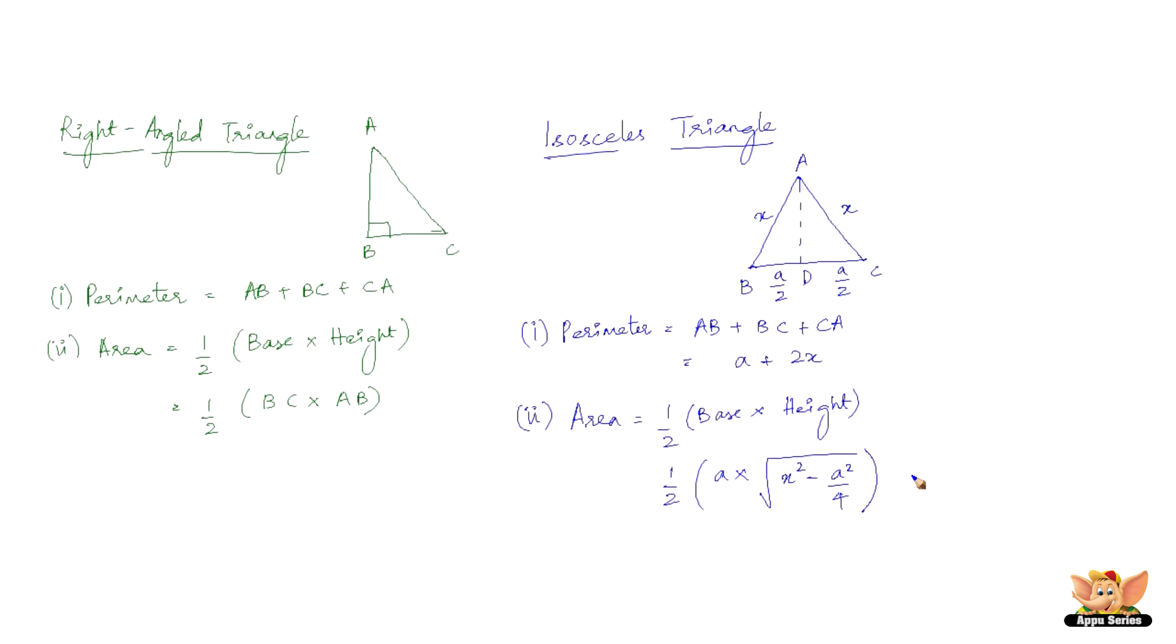Let us consider the isosceles triangle ABC where AB and AC are equal, denoted by x and x, and then we've got the third side BC which is a. It is divided by this line as a/2 and a/2.